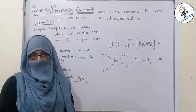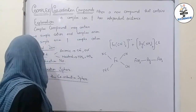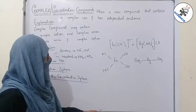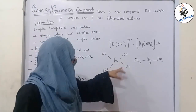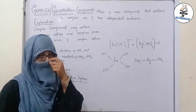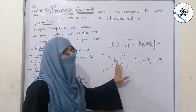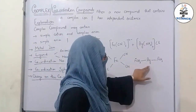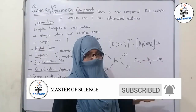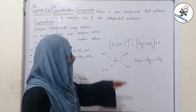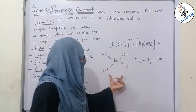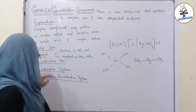Coordination number refers to the number of electron pairs donated to the central metal atom or ion. Consider [Fe(CN)6]^4-: iron is the central metal ion, and each cyano group donates one electron pair, giving four electron pairs donated — so the coordination number of iron is four. For [Ag(NH3)2]⁺, two ammonia molecules each donate one electron pair, giving a coordination number of two. We can also judge coordination number from the number of bonds.